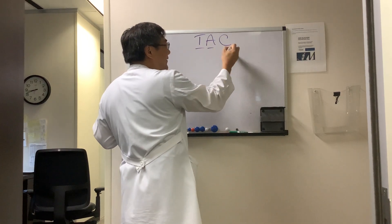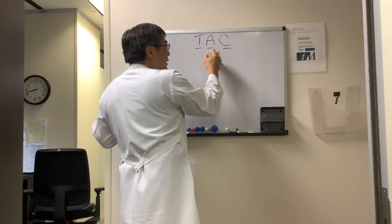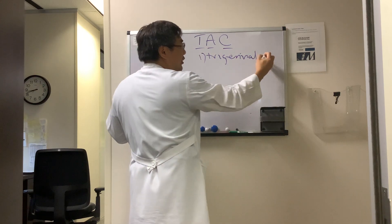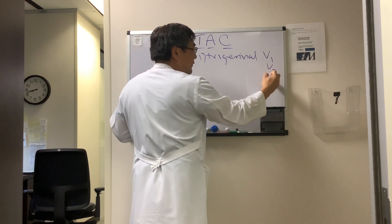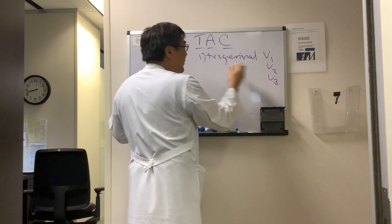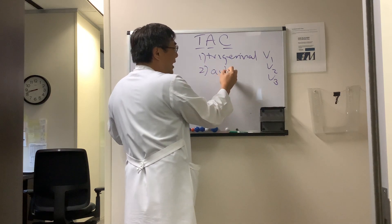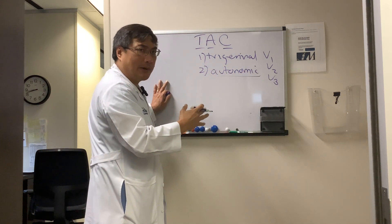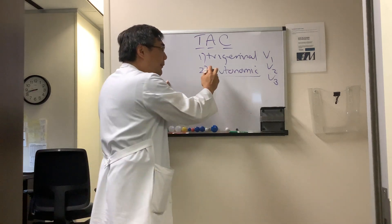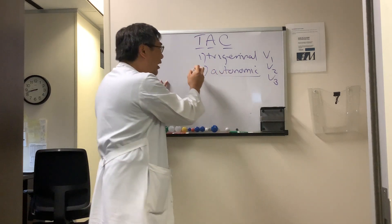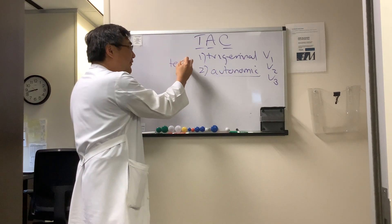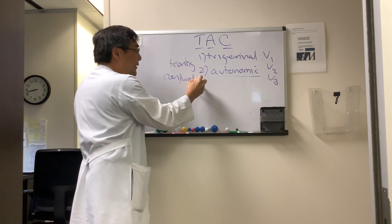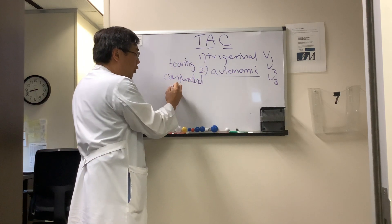Trigeminal autonomic cephalalgia — the important parts. Number one, it has to be trigeminal: V1, V2, V3. Number two, it has to have autonomic dysfunction — not like the autonomic dysfunction of migraine, which is nausea, vomiting, phonophobia and photophobia — but instead autonomic meaning tearing of the eye, conjunctival injection, and they might have a Horner syndrome.